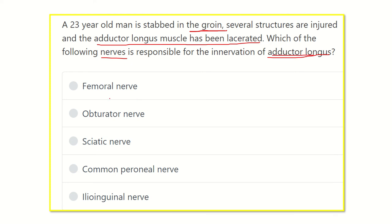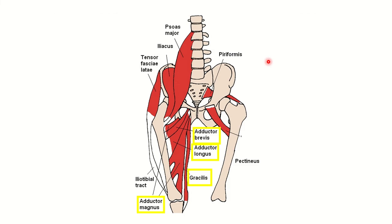The options are: femoral nerve, obturator nerve, sciatic nerve, common peroneal nerve, and ilioinguinal nerve. We have to find out the nerve which supplies the adductor longus muscle.